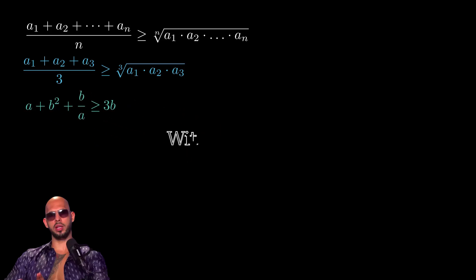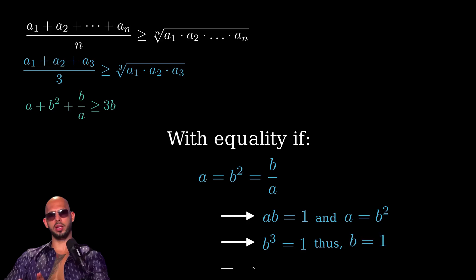When we're talking about when equality holds true, let's take a look at the arithmetic geometric inequality. Equality holds when A1 equals A2 equals A3. Now, in our specific scenario, this translates to a situation where A equals B squared and also equals B over A. What this means is that when you multiply A and B, you end up with one, and further, A equals B squared. This leads us to the conclusion that B cubed equals one, which can only mean that B has to be one. Ultimately, this brings us to the inescapable truth. A equals B and both are equal to one.